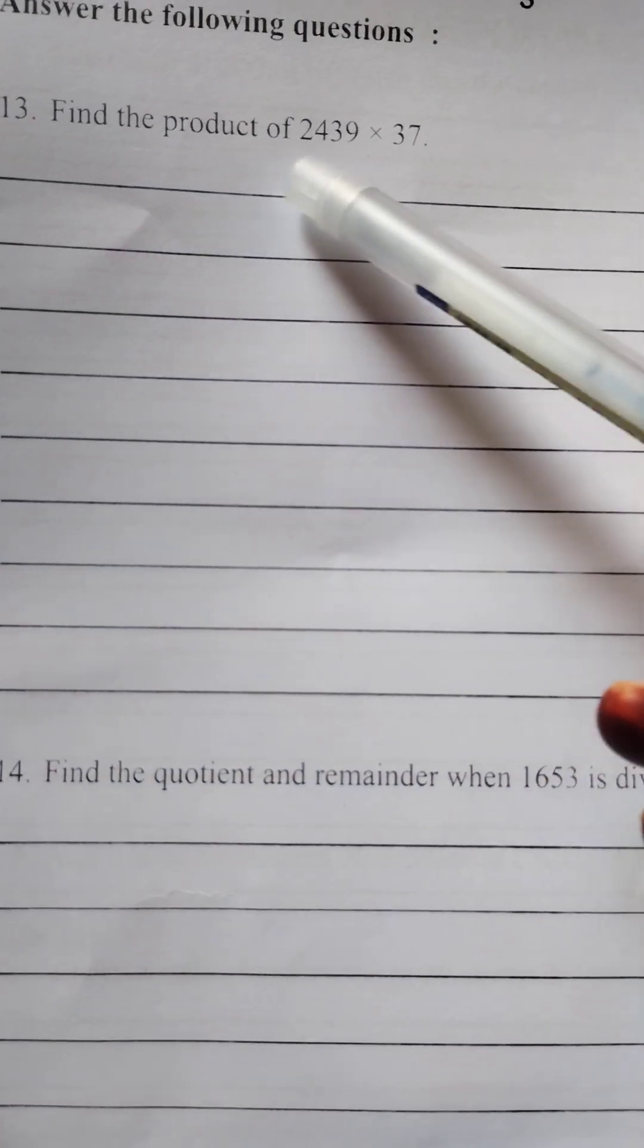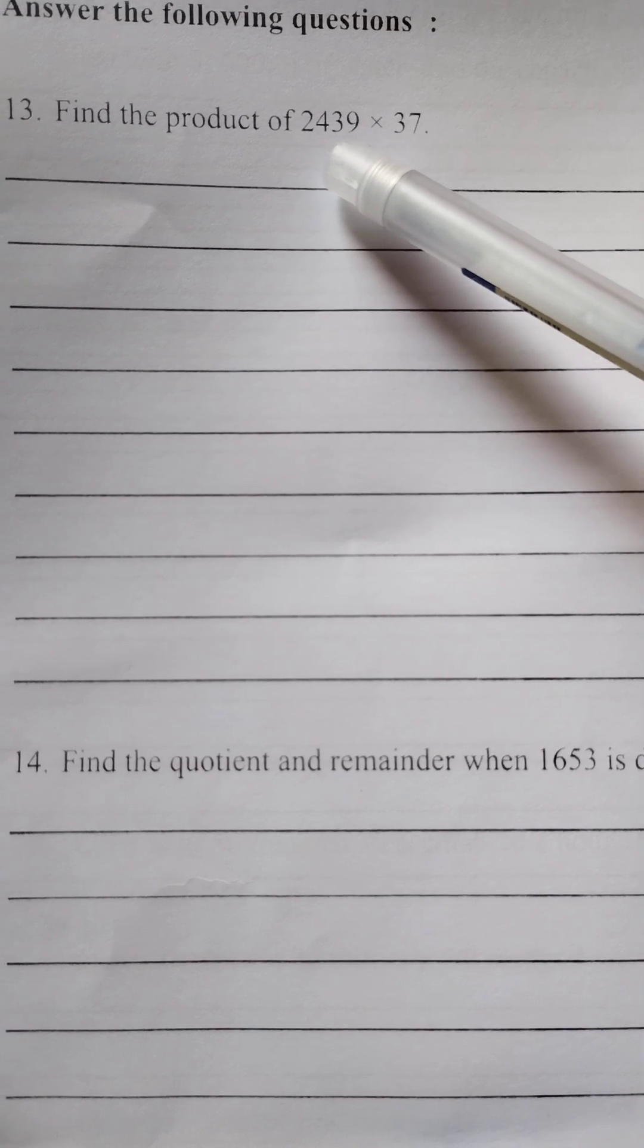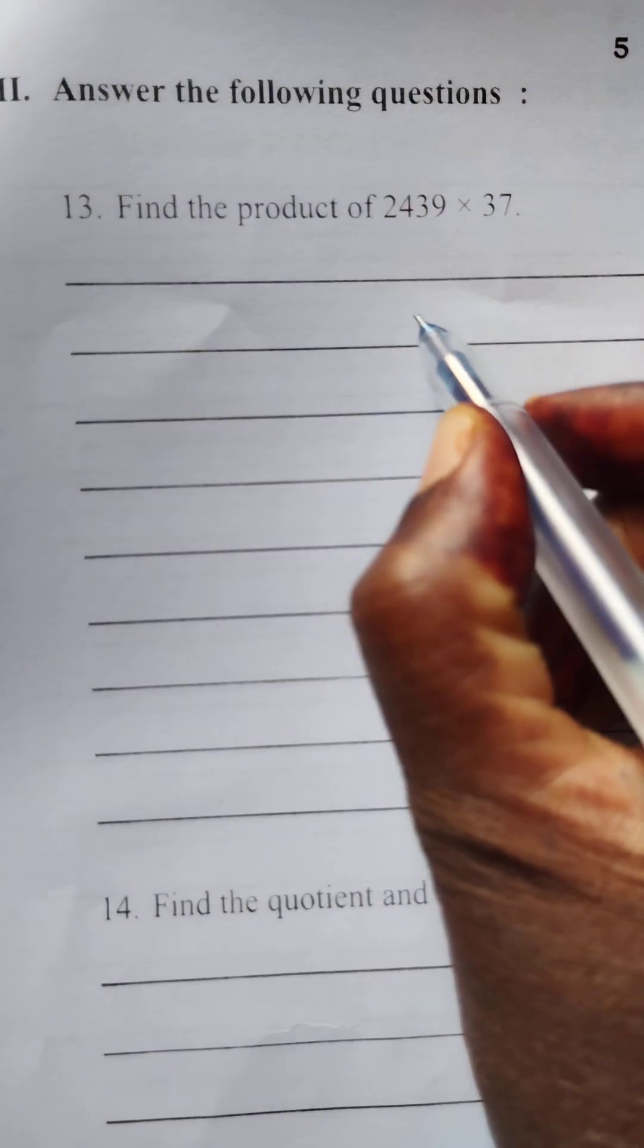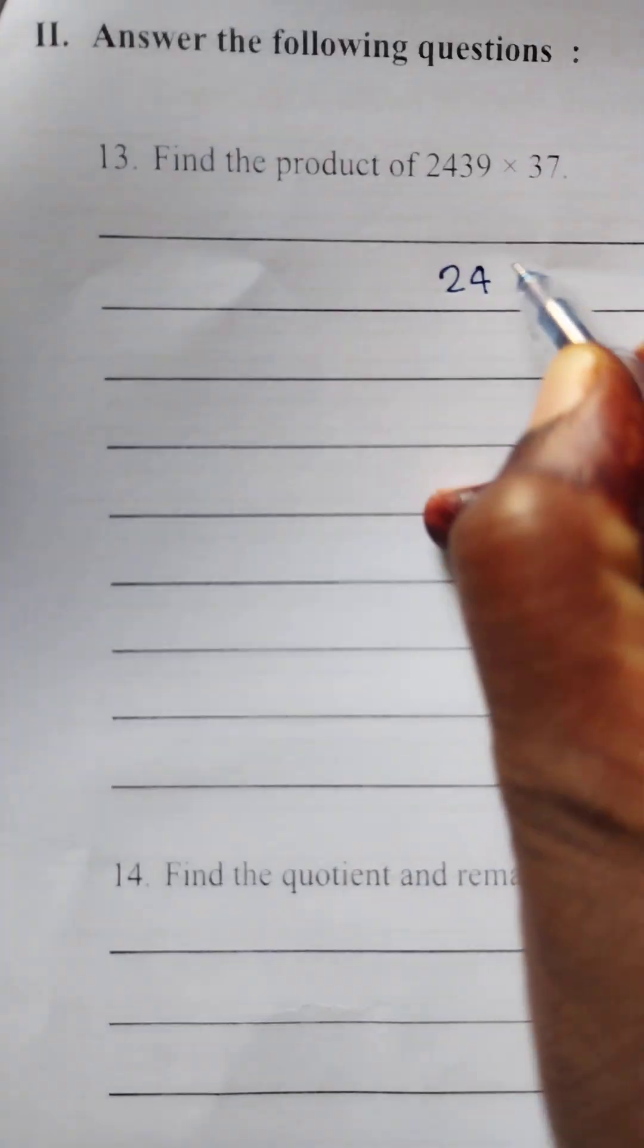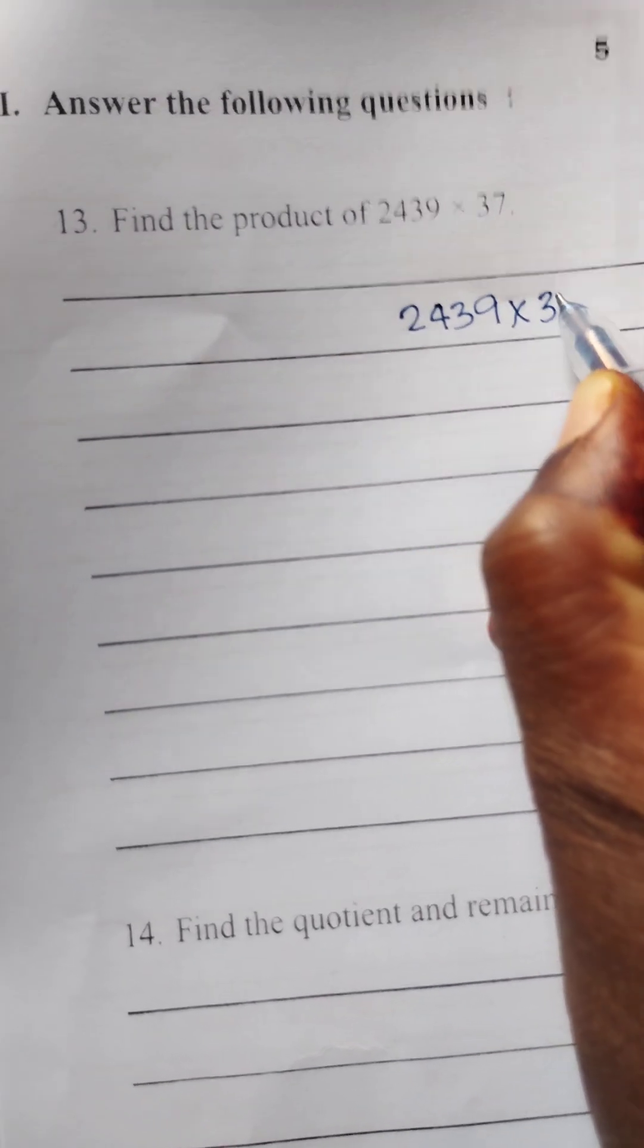Find the product of 2439 times 37. So you can write first here like this. You need to find the product. 2439 times 37.